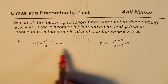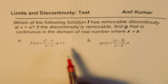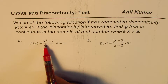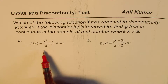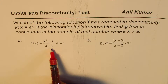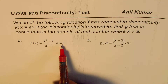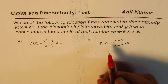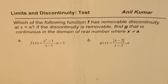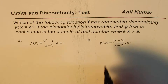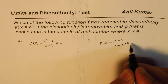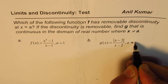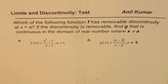The two functions to analyze are: f of x equals x to the power of 4 minus 1, divided by x minus 1, where a is equal to 1. The other one is g of x equals absolute value of x minus 2, divided by x minus 2, where a is equal to 2.